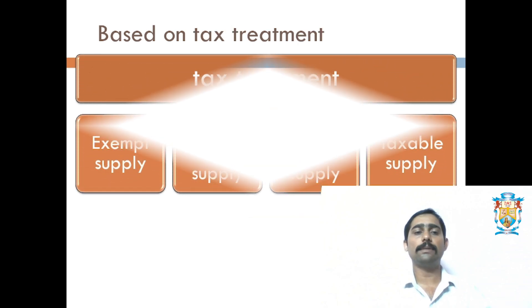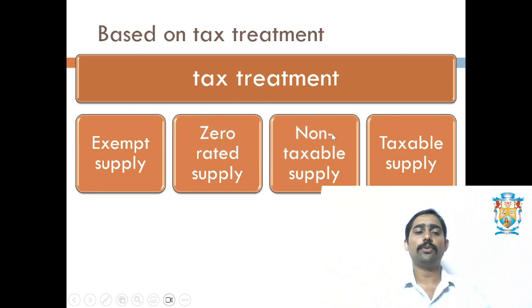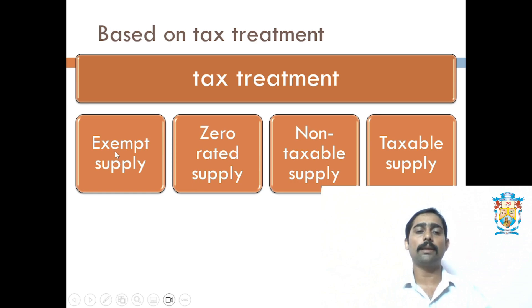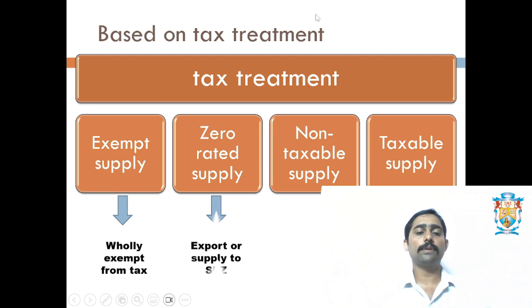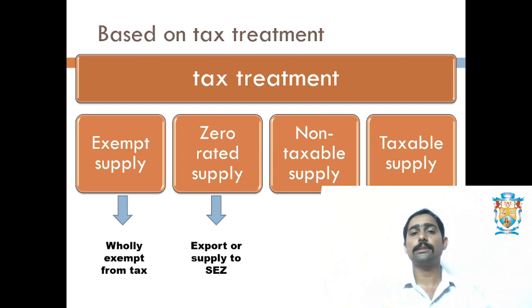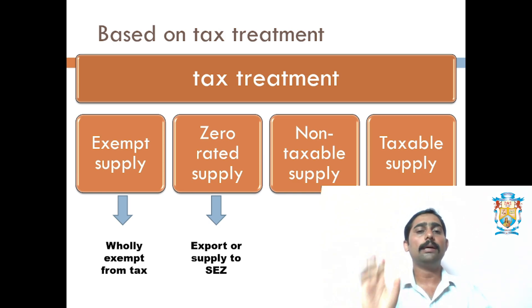The next type is based on tax treatment. Based on tax treatment we have four types: exempt supply, zero-rated supply, non-taxable supply, and taxable supply. The first three are supplies where no tax needs to be paid, whereas for the last one, tax will be paid. Exempt supply is fully exempt from tax — essential products on which tax is not supposed to be levied, such as rice, wheat, and sugar when sold unbranded as loose items.